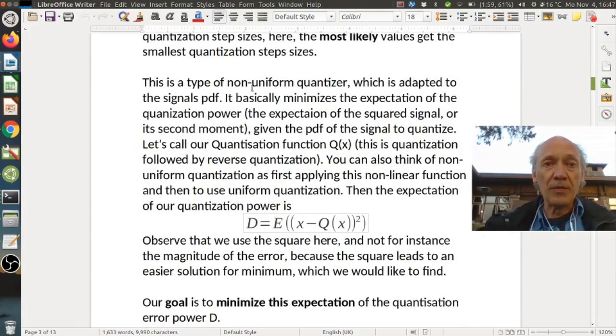Yeah, so this is a type of non-uniform quantizer, which is adapted to the signal's PDF. It basically minimizes the expectation of the quantization power, which is the expectation of the squared signal or its second moment, given the PDF of the signal to quantize.